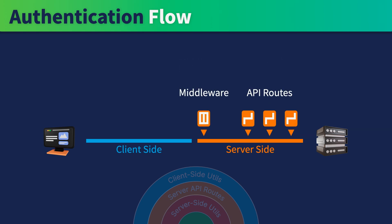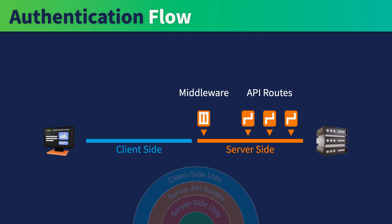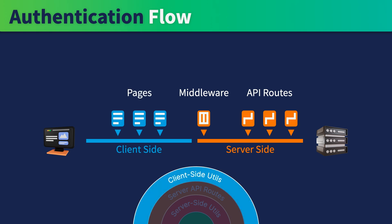A server middleware is needed to verify each request to see if it has a valid session. We'll use the server-side utils to implement the server middleware and API routes. On the client side, we'll need the corresponding pages to signup, login, and logout — and we'll use the client-side utils to implement those pages.